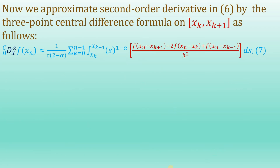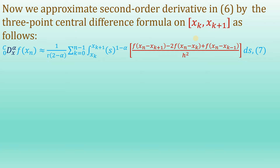We can now approximate the second-order derivative appearing in equation 6 using a three-point central difference formula on the interval xk to xk plus 1. This formula is familiar from classical numerical analysis. Substituting this approximation into equation 6 yields equation number 7.